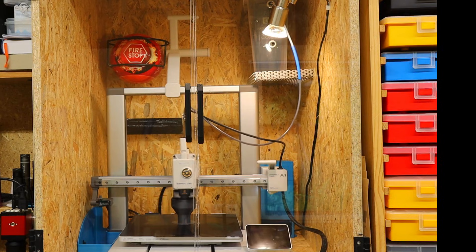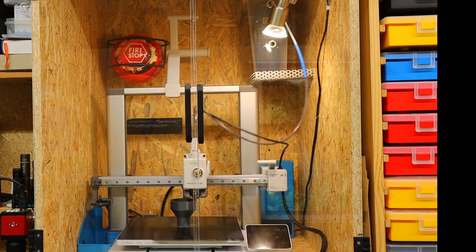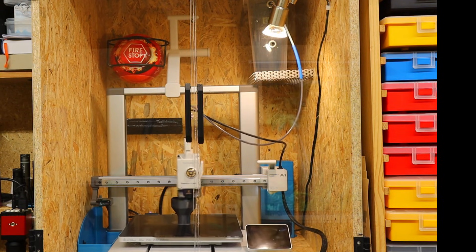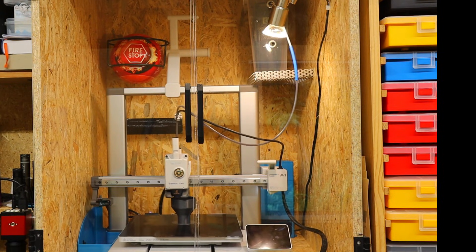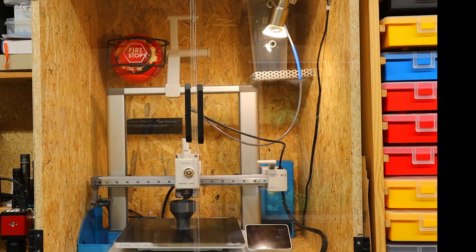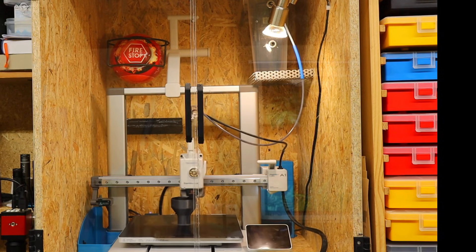A closed housing produces better results and prevents excessive warping. I made a housing out of wood and perspex panels, but a simple cardboard box with a foil window would work just as well for preventing draughts and keeping the heat inside the printing space.